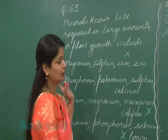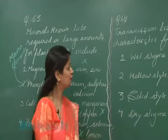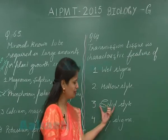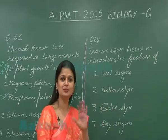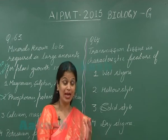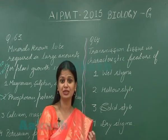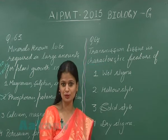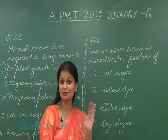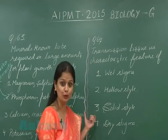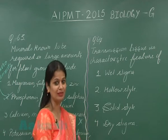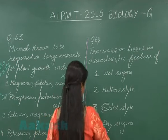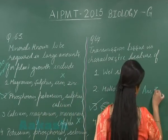Question number 64: transmission tissue is a feature of which structure? In the solid style, there is presence of transmission tissue, which has abundant intercellular spaces. Due to these intercellular spaces, the growth of the pollen tube in the style becomes easier. The correct answer is option number 3.